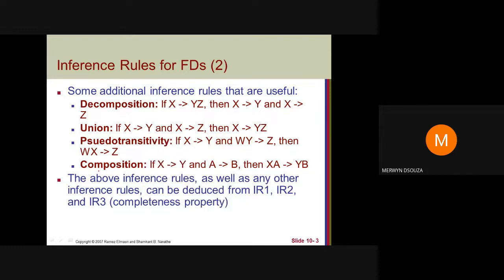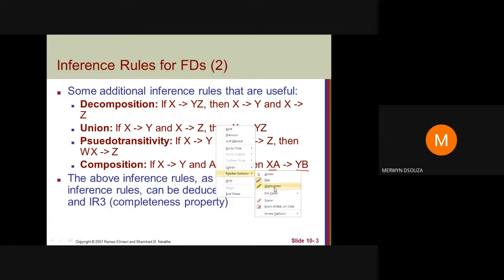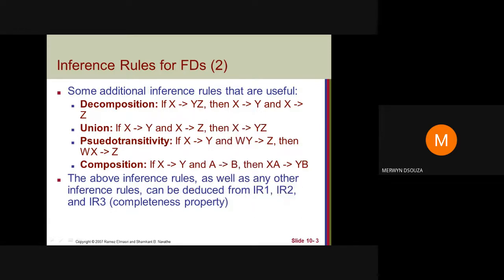Then we have the composition inference rule: if X determines Y and A determines B, then we can say XA determines YB. Similarly, we can derive more inference rules from the first three rules that were given.